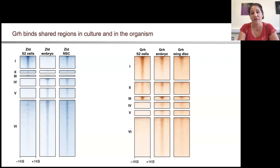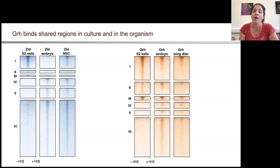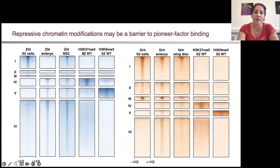We started to investigate what features might be at these additional regions where Zelda or Grainy Head could bind in vivo but not in S2 cells. One thing we noticed was an enrichment for either H3K27 trimethylation mediated by PRC2, or H3K9 trimethylation as a marker of constitutive heterochromatin. We termed these the class 4 and class 5 regions.